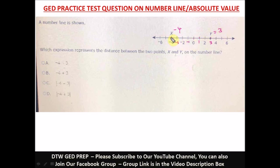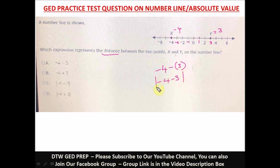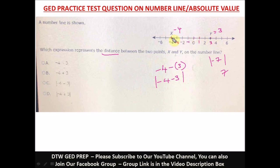The distance between X and Y is: X minus Y, which is −4 minus positive 3 in parentheses. Opening the parenthesis gives us −4 − 3. Since this is distance, we take the absolute value of this expression. Negative four minus three gives us −7, but distance can never be negative, so the absolute value of −7 is positive 7. You can verify by counting: 1, 2, 3, 4, 5, 6, 7 — that's the distance between X and Y. The correct option is option C: |−4 − 3|.